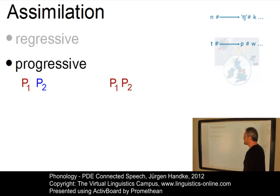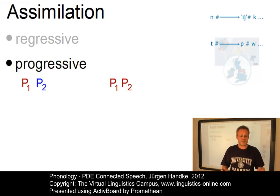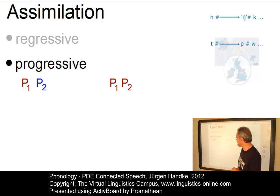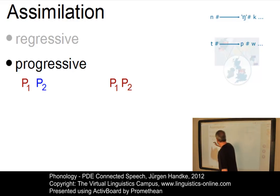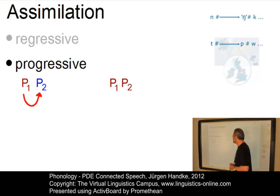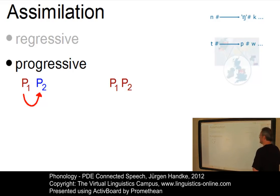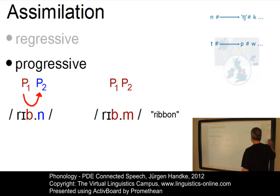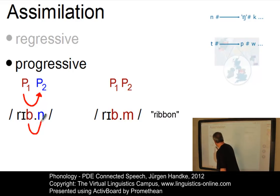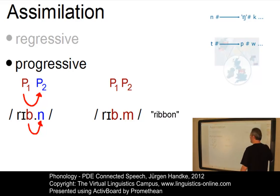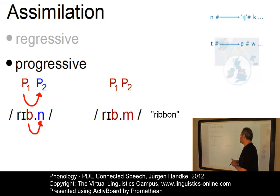The opposite direction is referred to as progressive assimilation. Progressive assimilation is again optional in present-day English and often found in rapid conversation. It occurs in those contexts where a syllabic N mostly follows a bilabial or velar plosive. This time the influence is the other way around: a phoneme influences its successor in terms of its place of articulation. Here is an example: 'ribbon' becomes 'ribbon', where the bilabial articulation at the end of 'rib' influences the alveolar nasal, which eventually becomes bilabial too.